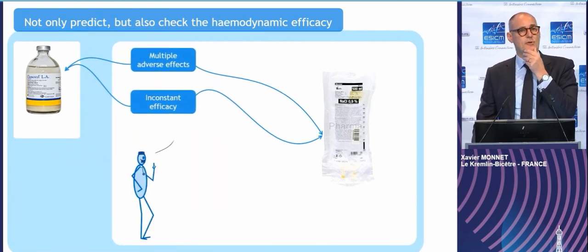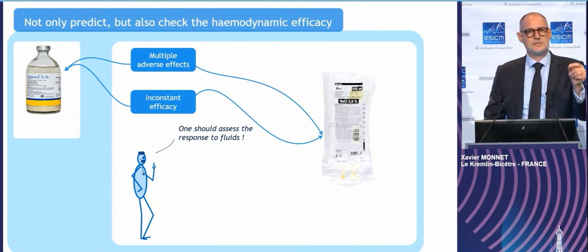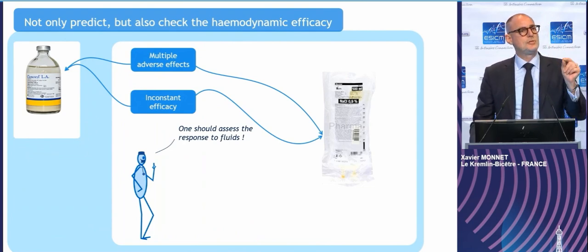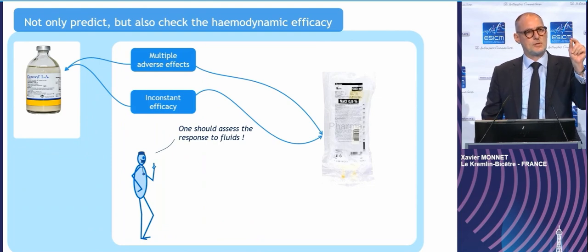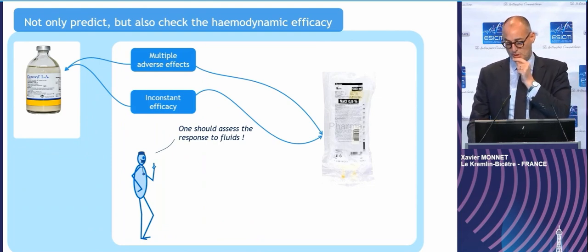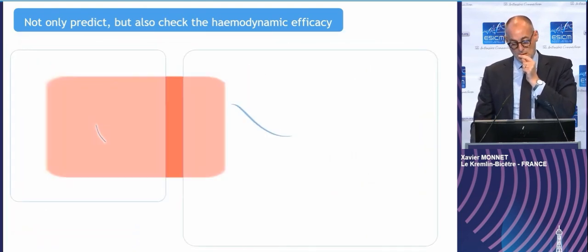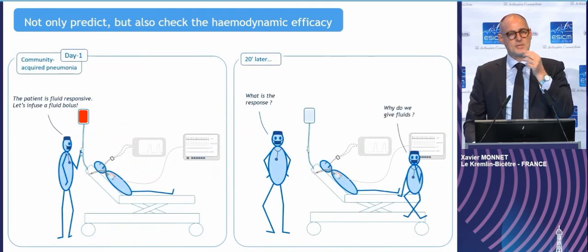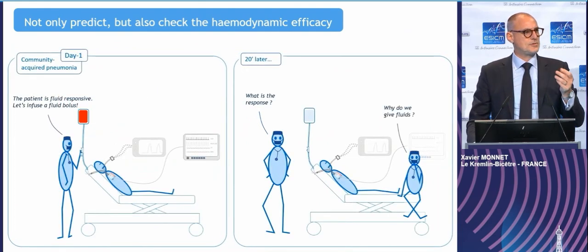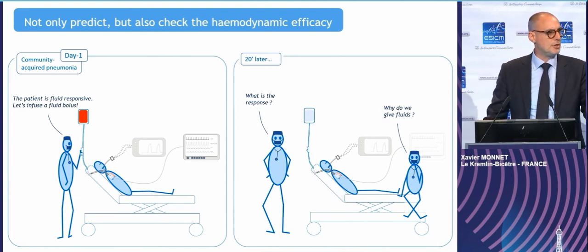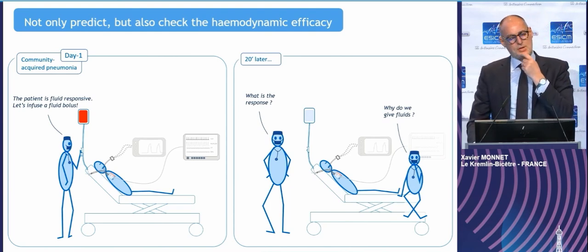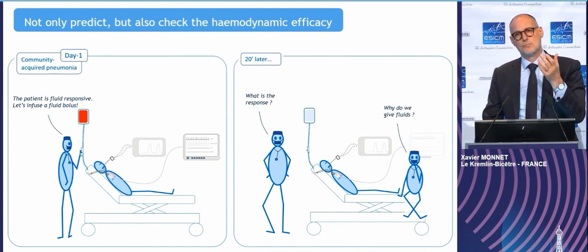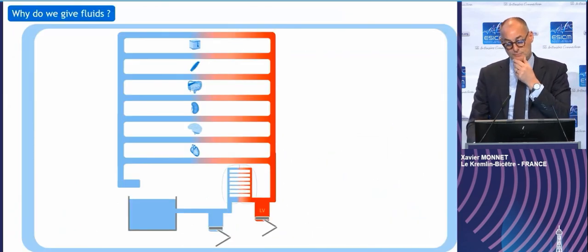You would not give an antibiotic without checking body temperature or CRP. The same for fluid. In these complex and severe patients as ICU patients, we should assess the response to fluid infusion. So how should we do in practice? To know what to monitor, we should ask ourselves: why do we give fluids? What do we expect from fluid infusion?